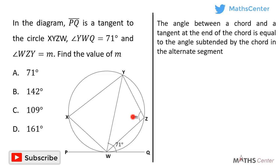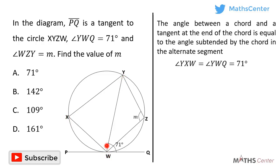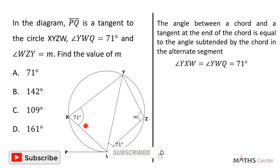The 71 degrees angle is in the minor segment, so the alternate segment is the major segment. By the tangent-chord theorem, the angle between the chord and tangent equals the angle subtended by chord WY at the circumference in the major segment, which is angle YXW. Therefore, angle YXW equals angle YWQ, which is 71 degrees.